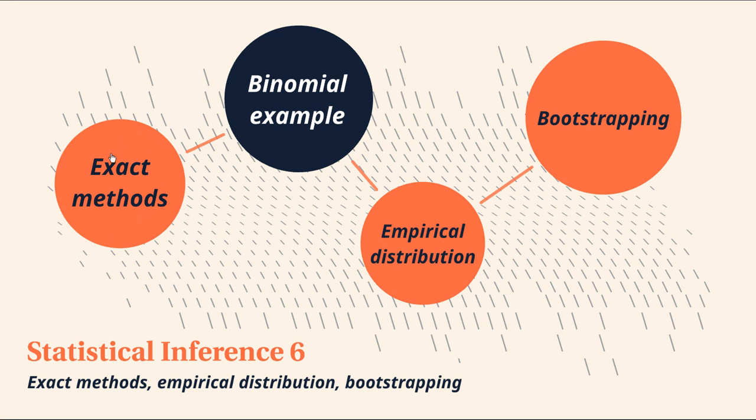So first up we have exact methods. That's exploring inference methods where we do not use a normal approximation. You would have noticed in many examples in the previous videos we've used a very handy normal approximation when our sample size gets significantly large enough. So the exact methods will help us out if we can't rely on that assumption.